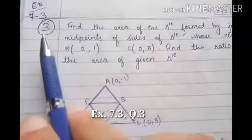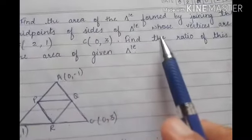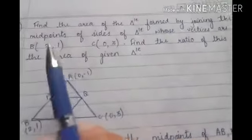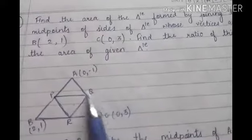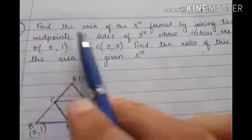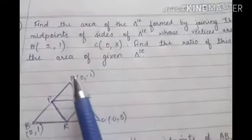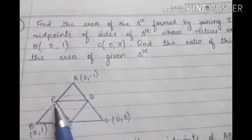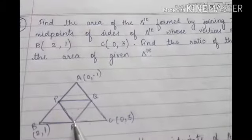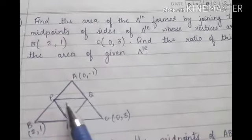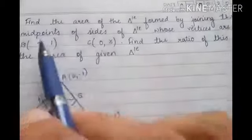The next question is from Exercise 7.3, question number 3: find the area of the triangle formed by joining the midpoints of sides of a triangle whose vertices A, B, and C are given. So triangle ABC is given to us, and we need to find the area of the triangle formed by joining the midpoints of its sides. Side AB has midpoint P, side AC has midpoint Q, and side BC has midpoint R. We need to find the area of triangle PQR.